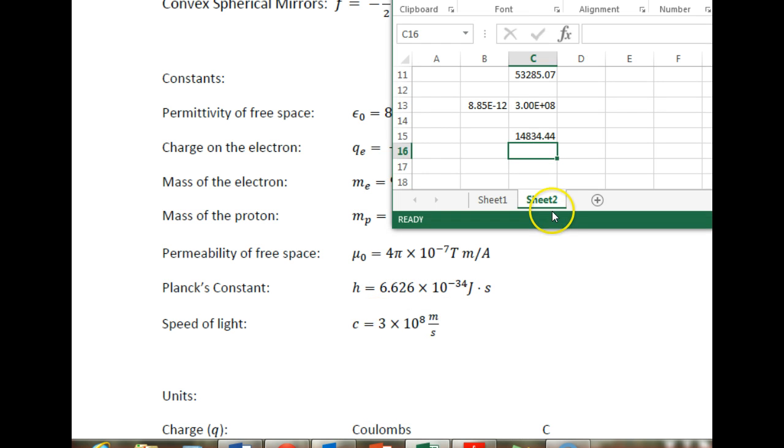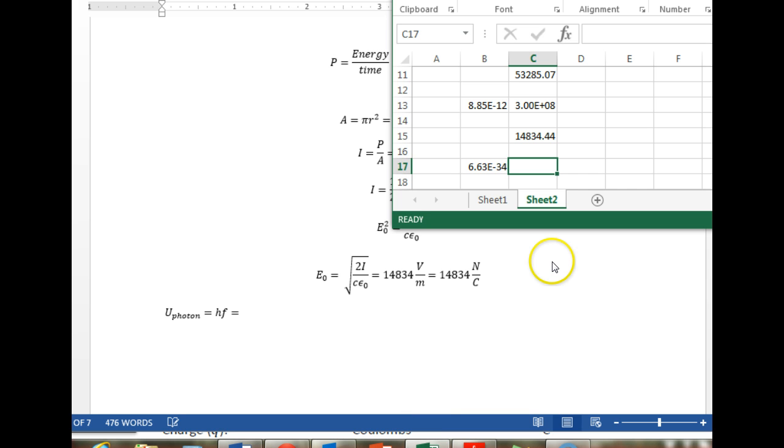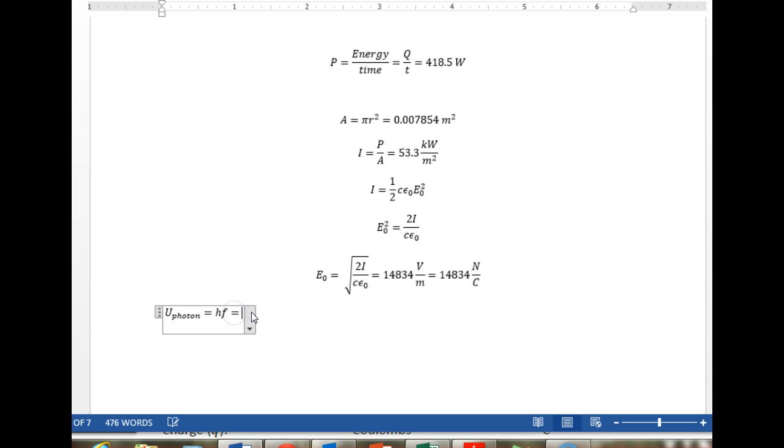6.626 times 10 to the minus 34 joules seconds. What is our frequency? Our frequency in this problem is 2450 megahertz. So that's 2450 times 10 to the sixth hertz. So the energy in a single photon is the product of these two. That's 1.62 times 10 to the minus 24 joules is the energy in a single photon.